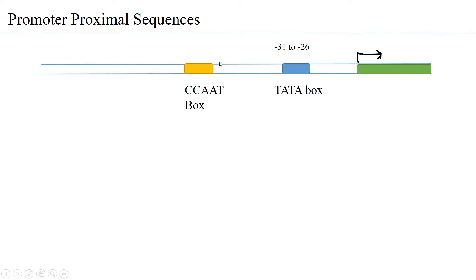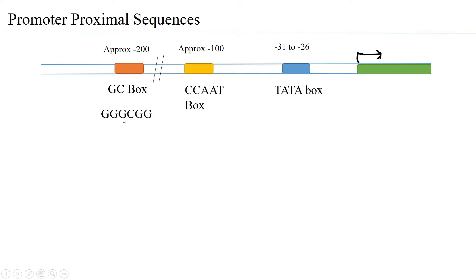At about minus 70 to minus 100 base pairs is present what is called a CCAT box — CCAT is the consensus sequence and it is generally called the CAAT box. This is preceded upstream at approximately minus 200 by another element called the GC box, in which the consensus sequence is GGGCGG. Further upstream of the GC box, certain other stress elements are also present: either GCCACACCC or ATGCAAAT, which are also part of the promoter proximal sequences.